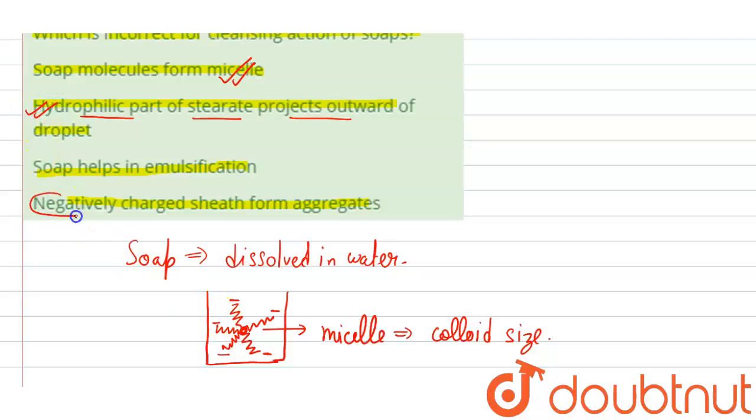Now this hydrophilic part has negative charge in case of soap. Yes, it has a negative charge. So that means negative charge is also present, micelle is also formed, and the hydrophilic part will be dissolved in water, will be towards water droplets, because they are water-attracted.